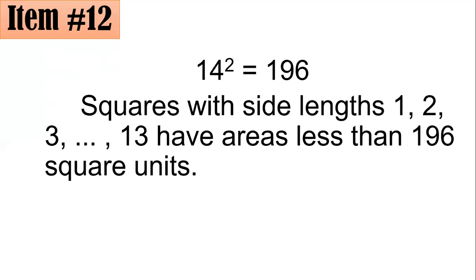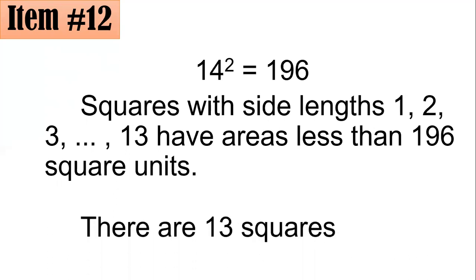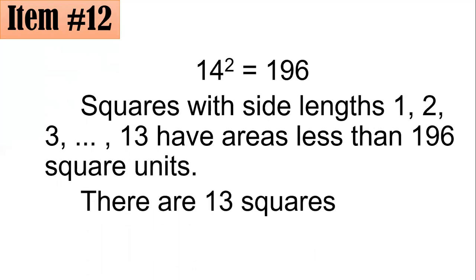If you go beyond that — if you have 14 squared, 15 squared, and so on — it will not satisfy the condition of having an area less than 196. Hence, there are only 13 such squares. Letter B is the correct answer.